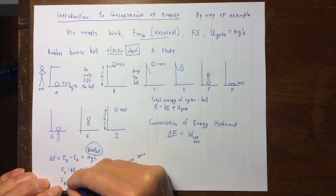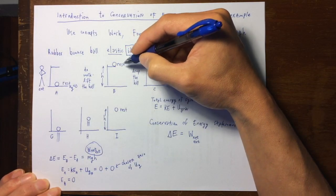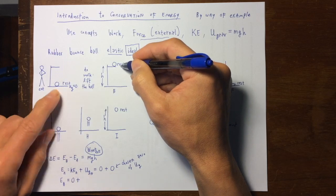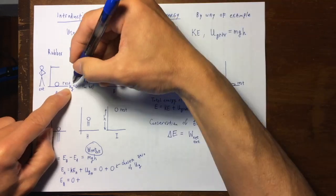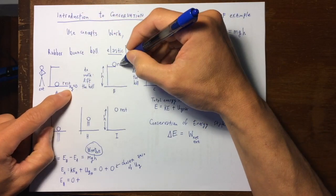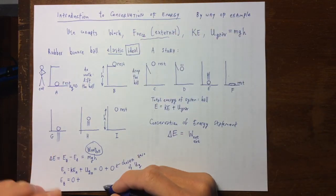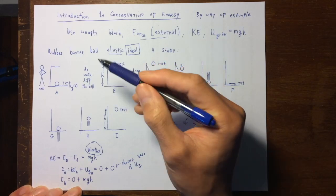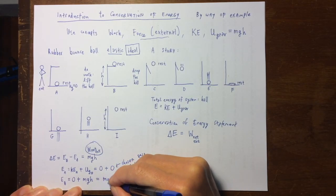At B, the kinetic energy is zero since the ball is at rest again. But the potential energy at B is not zero, because I've already chosen where zero is for gravitational potential energy. The gravitational potential energy of the ball when it is higher up is the mass of the ball times gravity times the height above the zero position. So this is MGH.